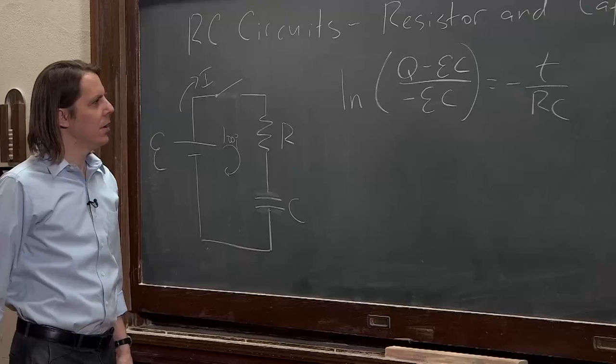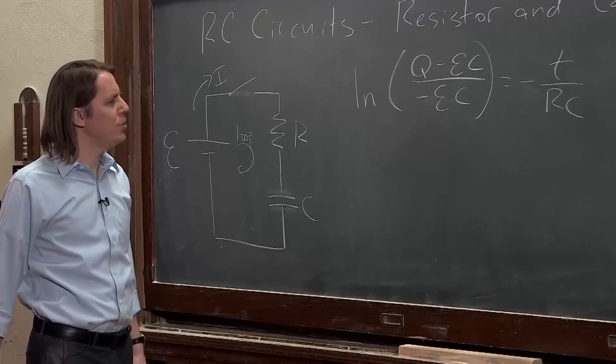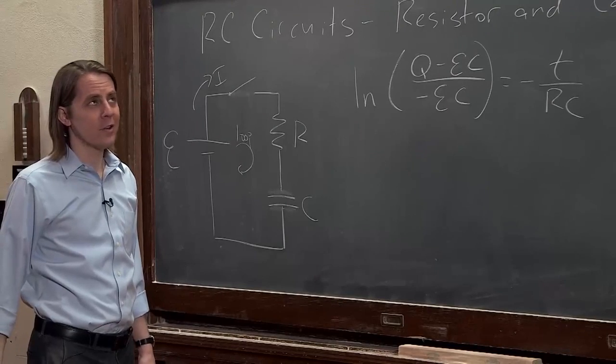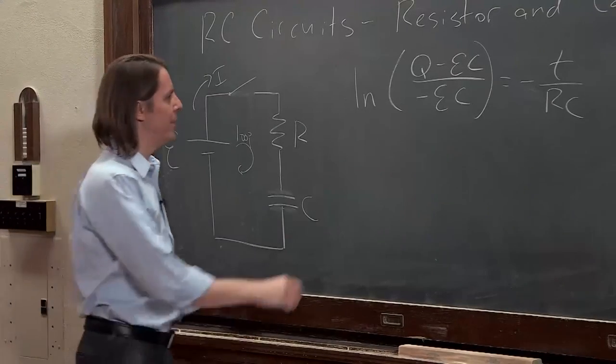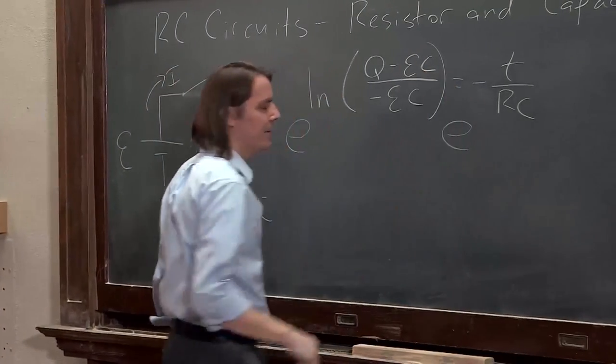OK, now let me remember what we're trying to do. I think we're trying to find Q, right? We're trying to find Q as a function of time. So if we want to get Q out of that natural log, you exponentiate both sides of the equation. So you basically say E to all this and E to all that, OK? Because E to the natural log of something is just the thing.